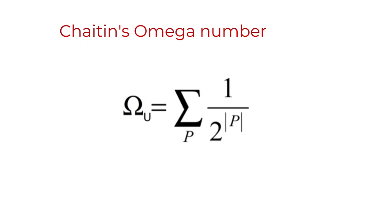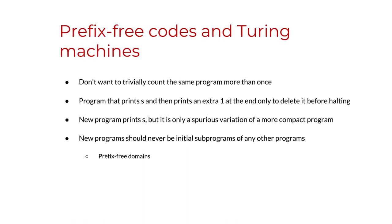However, the Turing machine has to be somehow special — a type of Turing machine that is often called a prefix-free Turing machine. There is a special type of computer, called prefix-free, that has to be used for objects such as Chaitin's omega, and is also sometimes used to define algorithmic complexity.